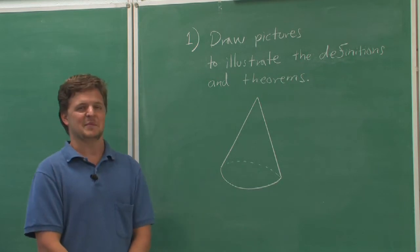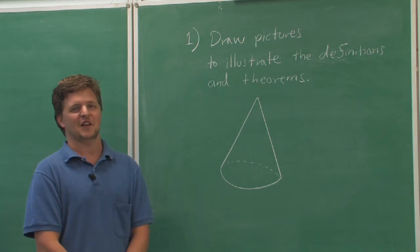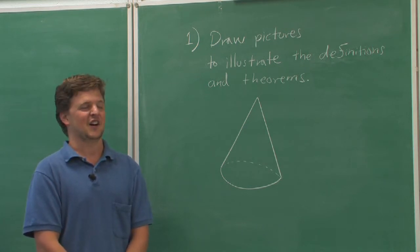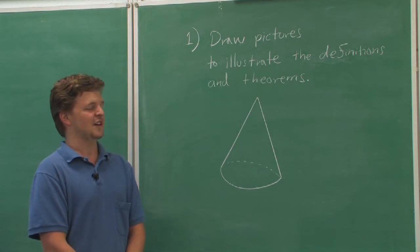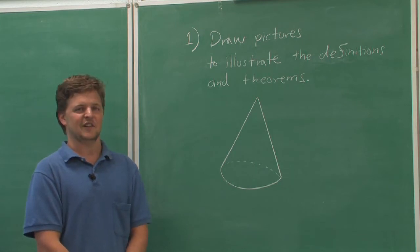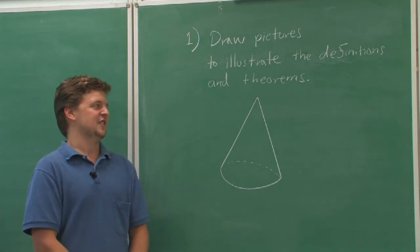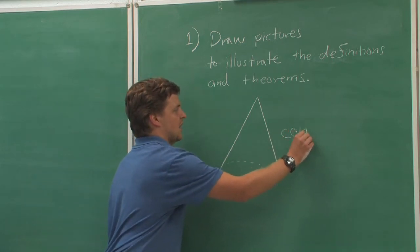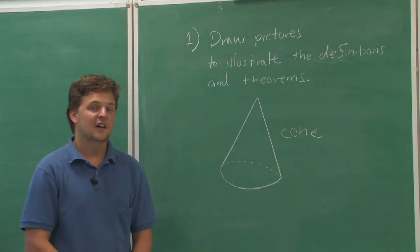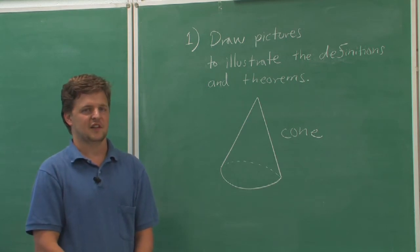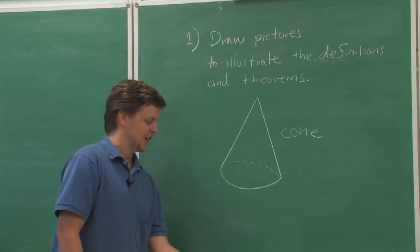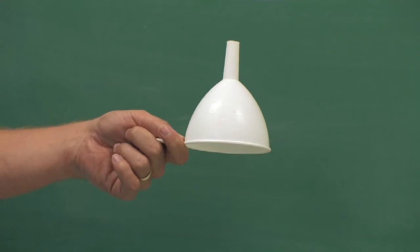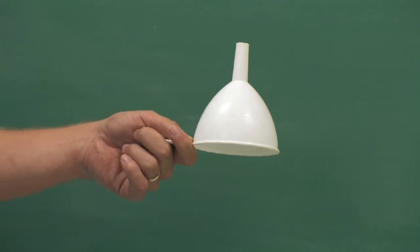First, draw pictures. That seems pretty obvious, but even in a lot of books there aren't enough pictures to really get the idea across. You need to illustrate the definitions and the theorems. For instance, here's a drawing of a cone. In three dimensions, a cone looks like this funnel, more or less.